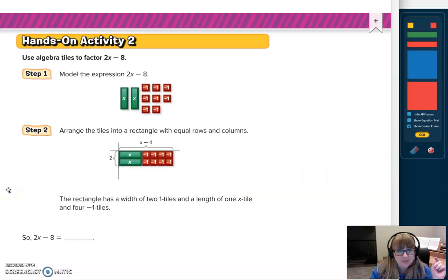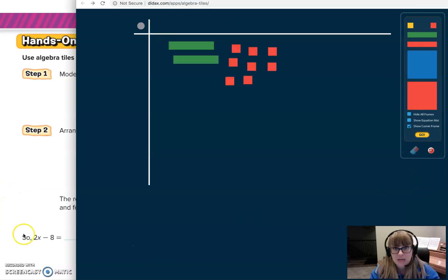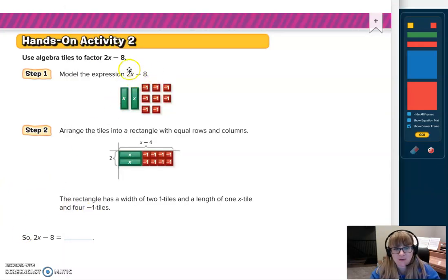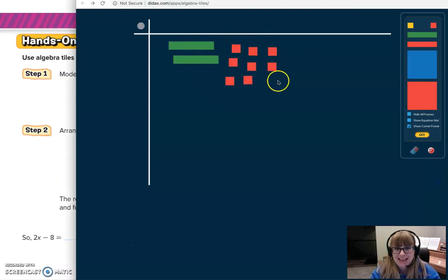We have 2x minus 8. So I'm going to go ahead and get my Didax algebra tiles ready. Remember, this problem said 2x minus 8. So my first step would be to think of that as 2x plus a negative 8. And I would represent that 2x and the negative 8 with those negative unit tiles there. And I've got 8 of them.